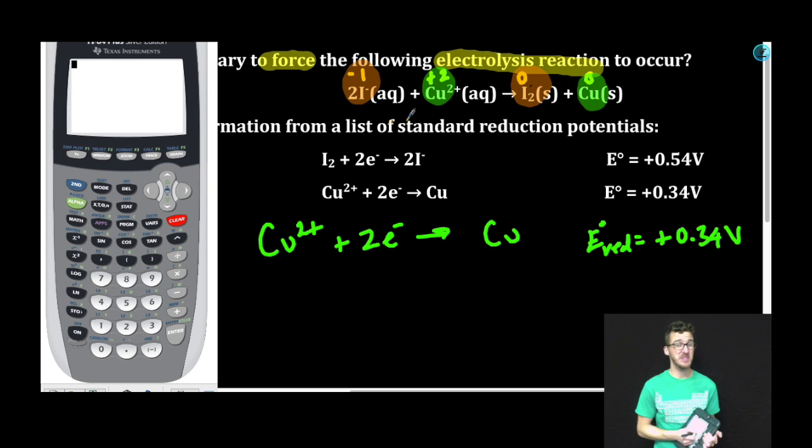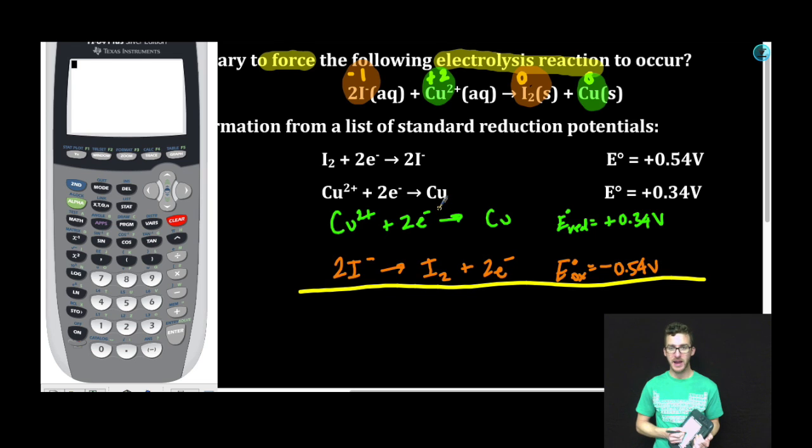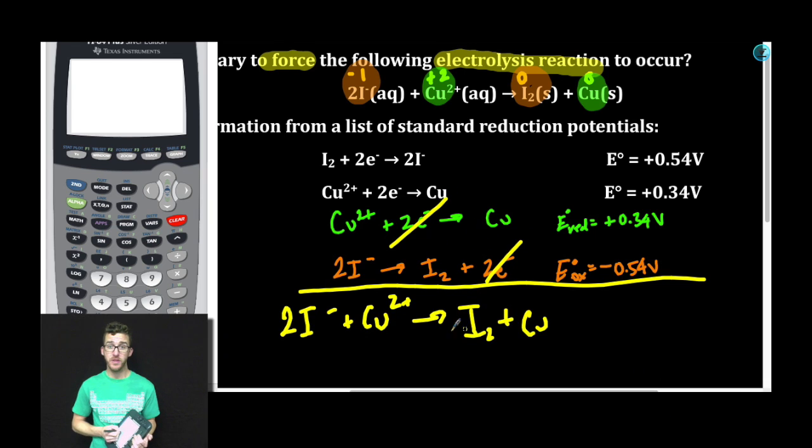Recognize that that process is oxidation. And since we're given the reduction half reaction, I'm going to flip this reaction, and therefore flip the sign of the reduction potential to give me the oxidation potential for that reaction. Now, when I combine these two half reactions, notice my electrons cancel and I end up with the overall reaction that I initially started with.